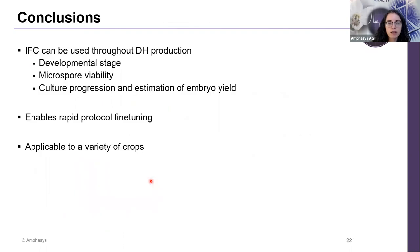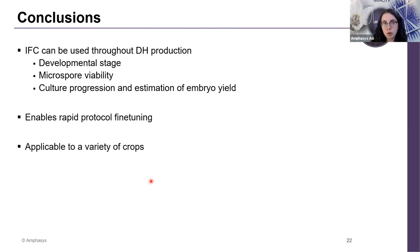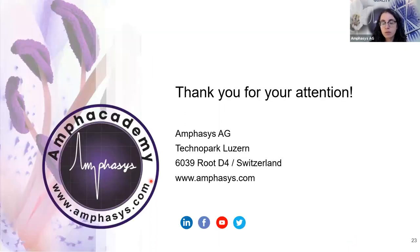So with this, I'm already at the end of my presentation. Let me summarize what I've been discussing. I showed you that the AMPAS Z32 is a very handy tool when it comes to producing double-haploids. You can assess the developmental stage of microspores, making it much easier to select the right input material to start with the best that you can. You can also use the AMPAS Z32 for assessing microspore viability, and thereby compare multiple treatments at the same time and refine your protocol. And finally, you can look at what's happening in your culture over time and even be able to estimate the embryo yield. Altogether, the AMPAS Z32 enables rapid protocol fine-tuning and can be applied for multiple species. Thank you for your attention and I'm happy to answer your questions.